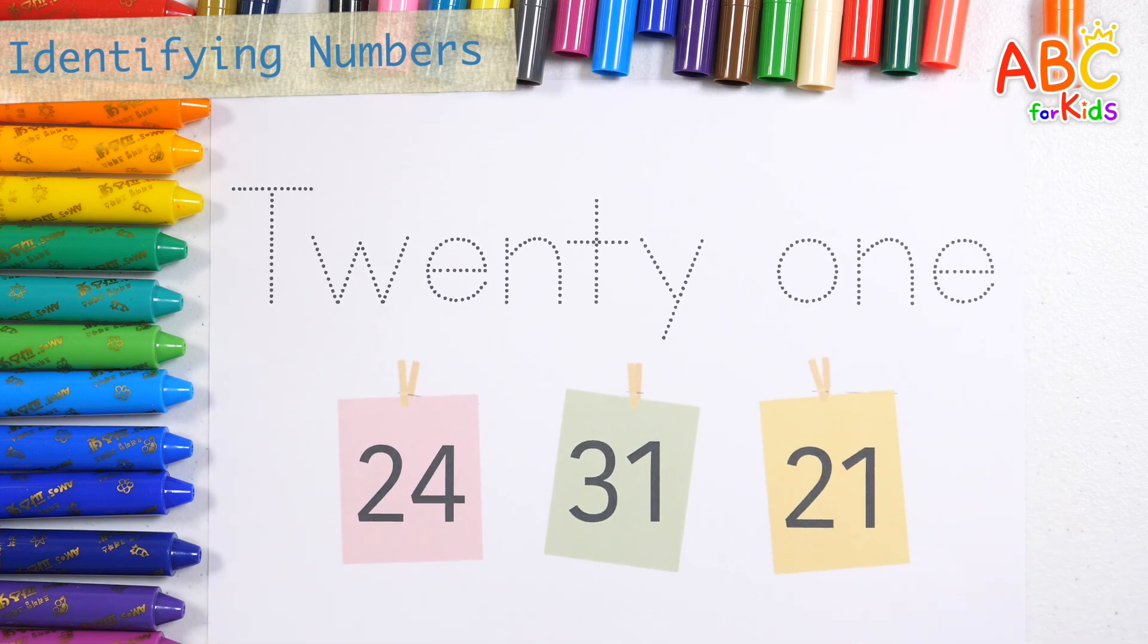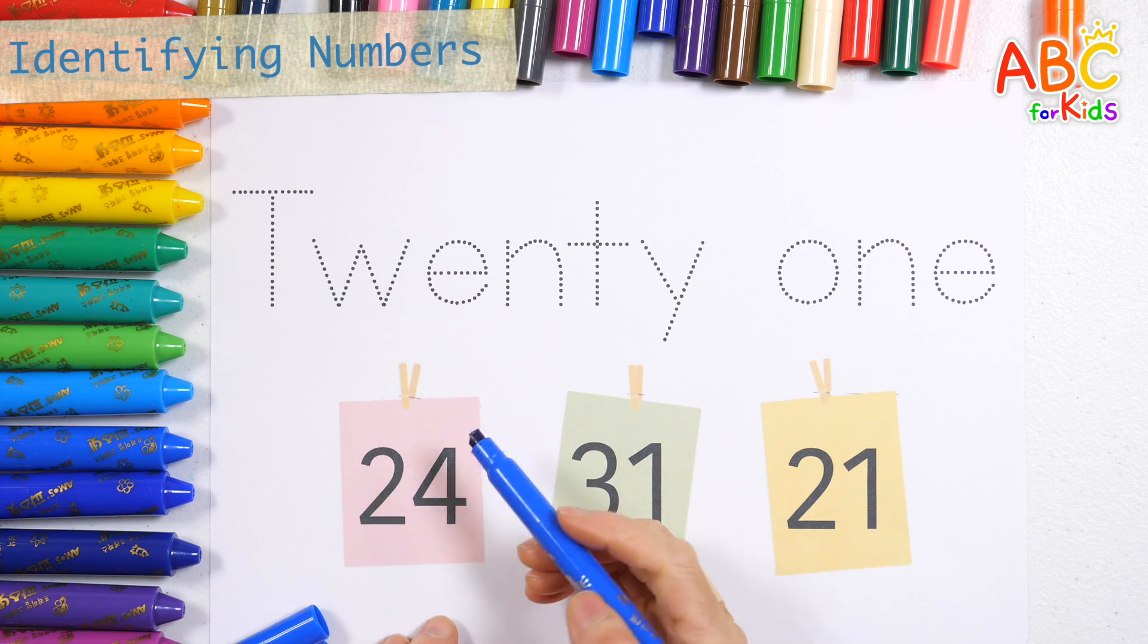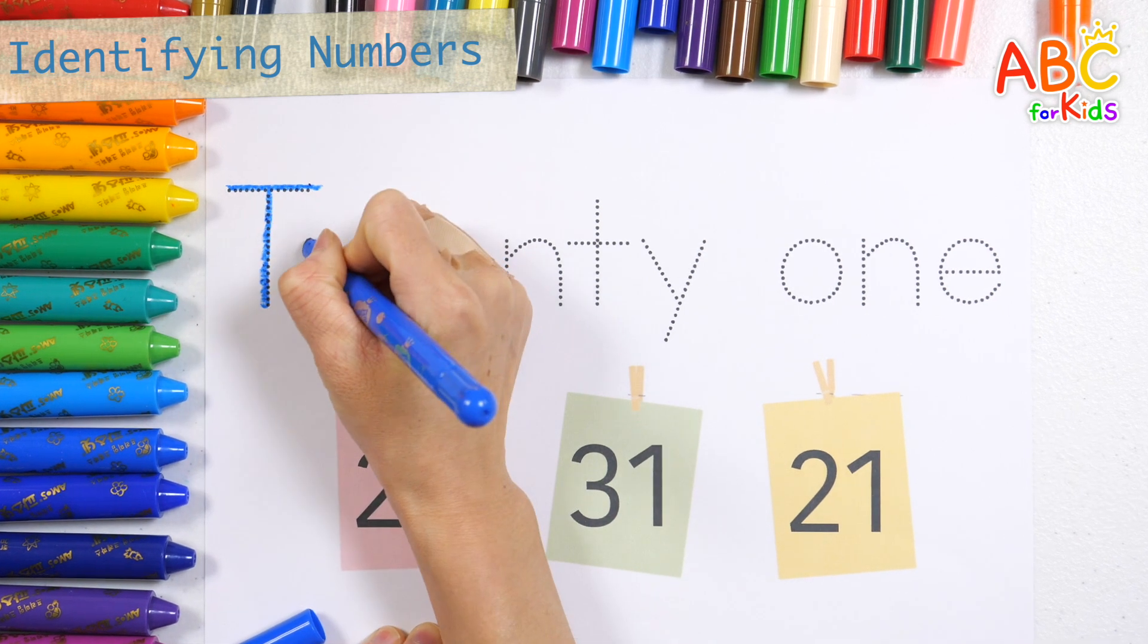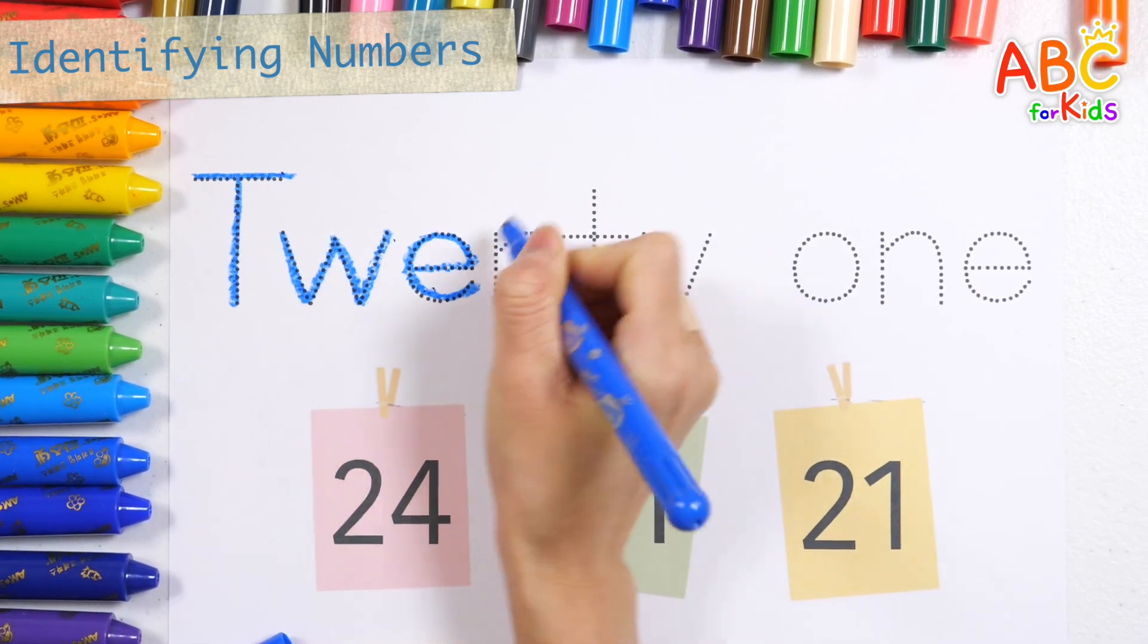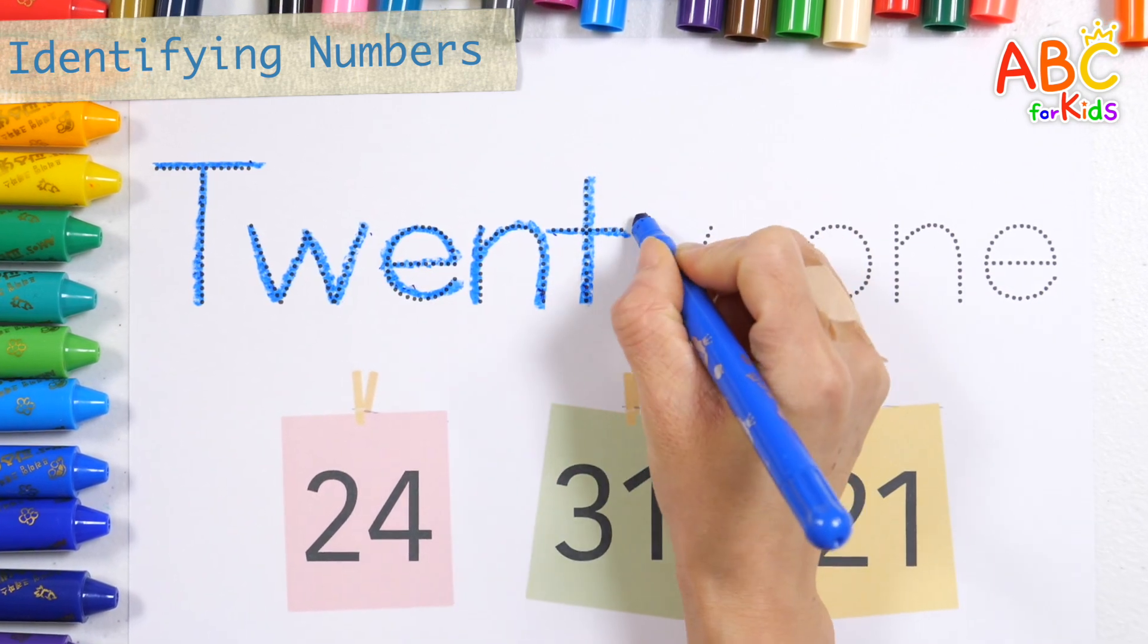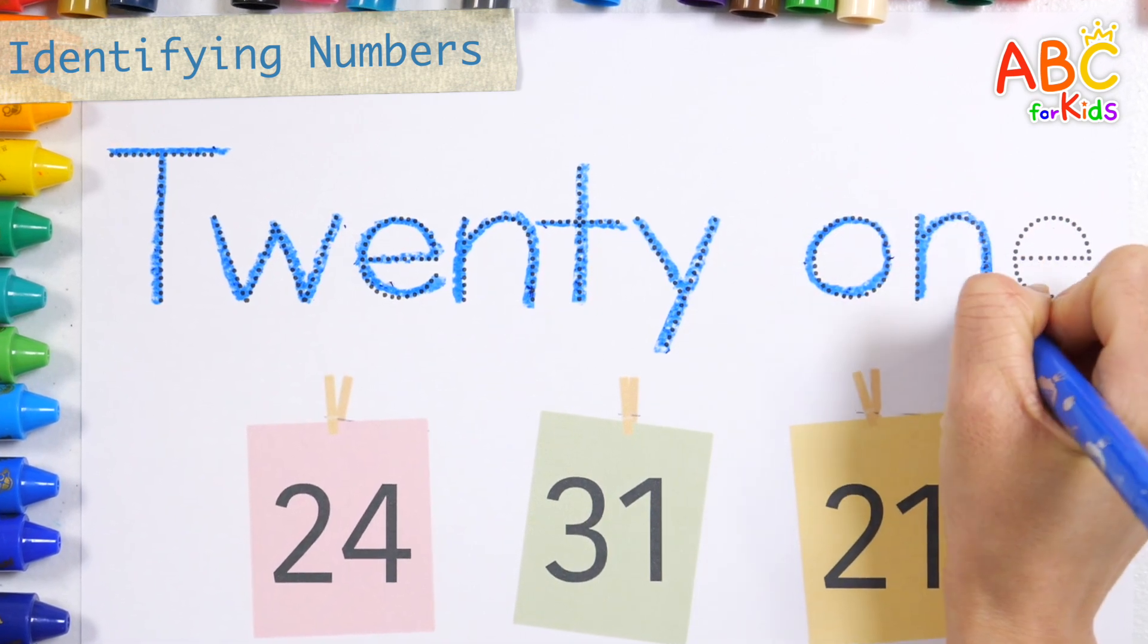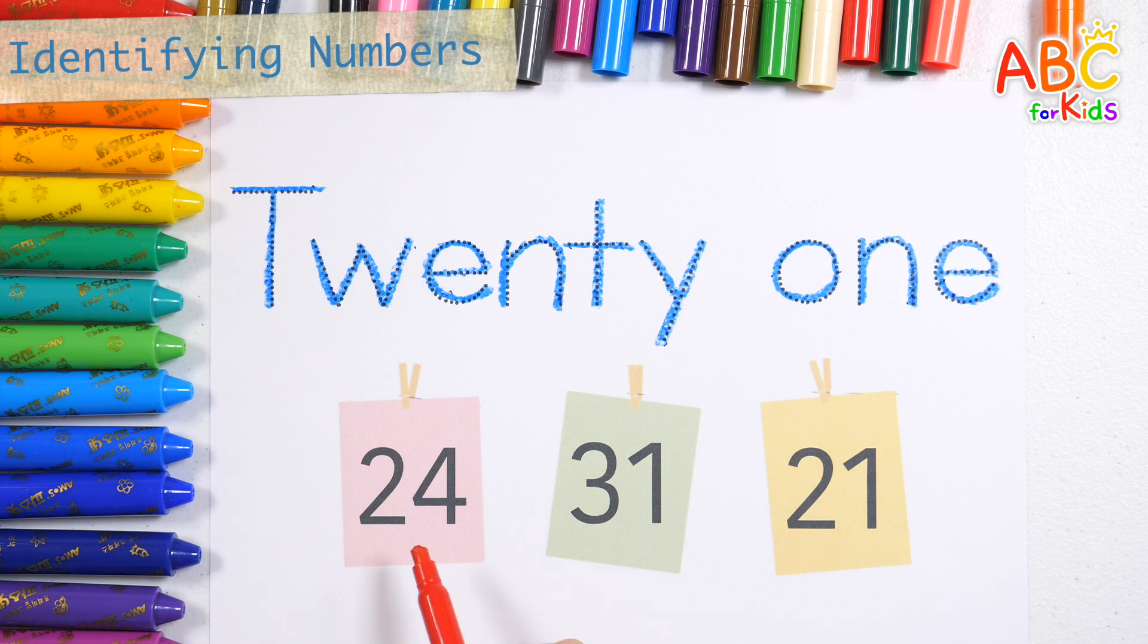Let's write the letters and find the correct number. T-W-E-N-T-Y O-N-E. Find the right number. That's right!